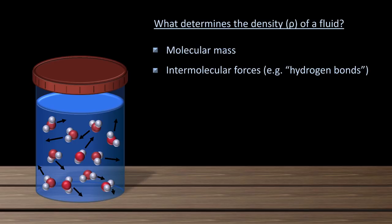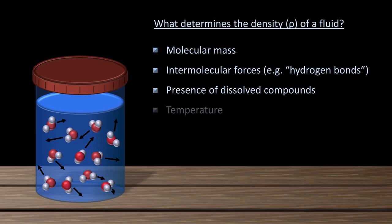Other determinants of density include the presence of dissolved compounds, as dissolving something like salt or sugar in water tends to impact the mass of the liquid much more than it changes its volume. Temperature also impacts density, with higher temperatures leading to lower densities and lower temperatures leading to higher ones. And finally, there's pressure.